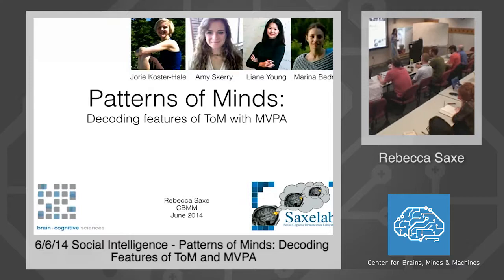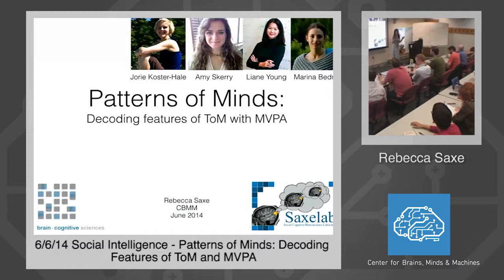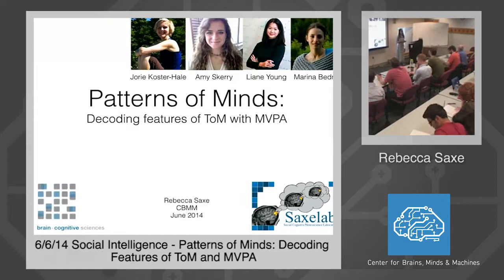The overall topic my lab has been working on for quite a while is how we can use neuroscience to understand high-level human capacities — in particular, theory of mind, the ability people have to think about other people's mental states. This is exciting to study partly because it's a very abstract aspect of cognition that includes all the hard problems of really high-level intelligence, and sets a bar for hard problems in AI as well. But it's possible to study with neuroscience because of the existence of distinctive brain regions involved in this process.